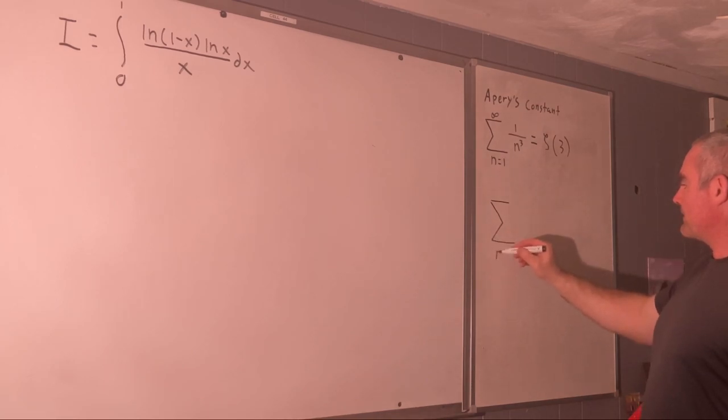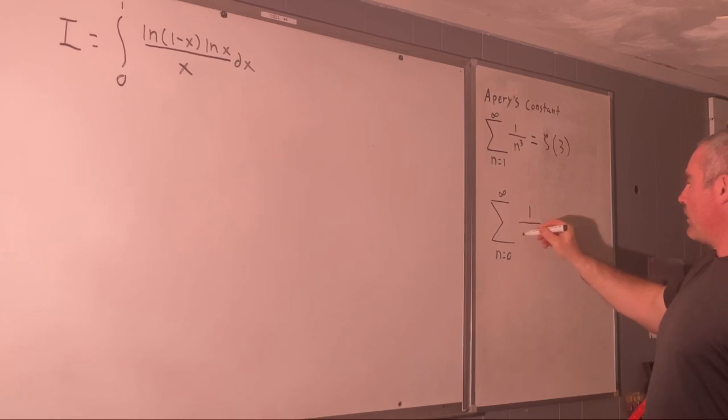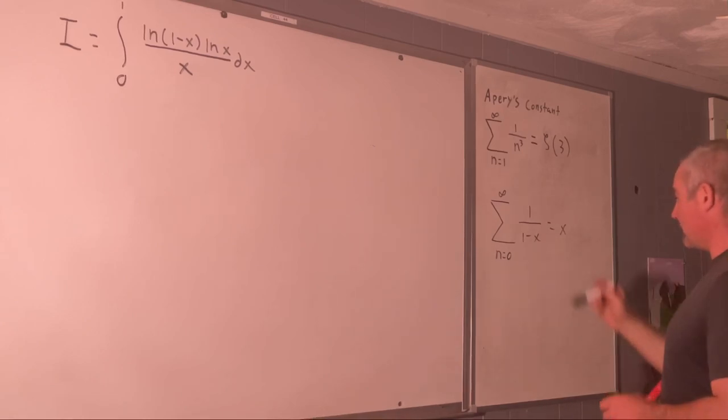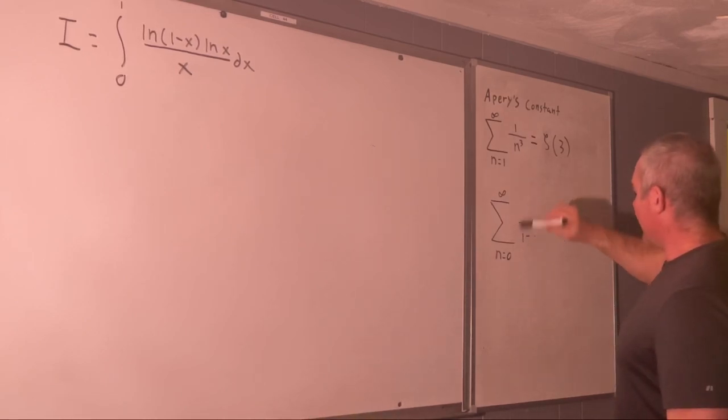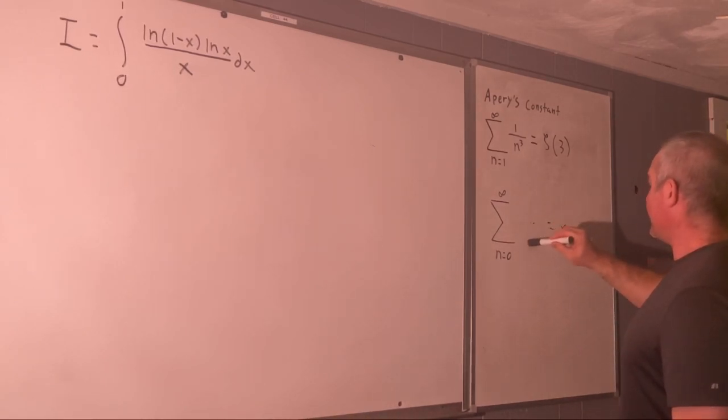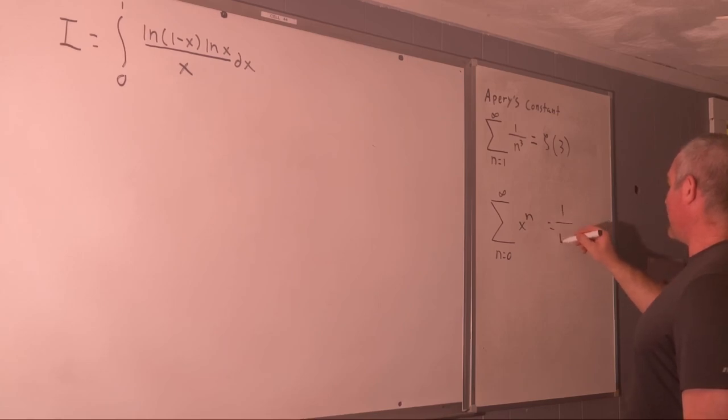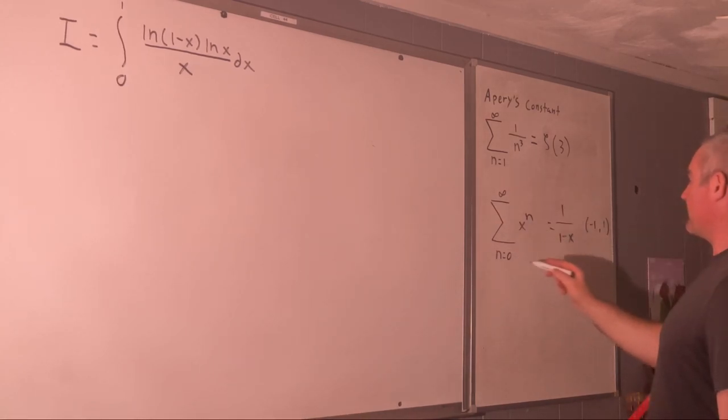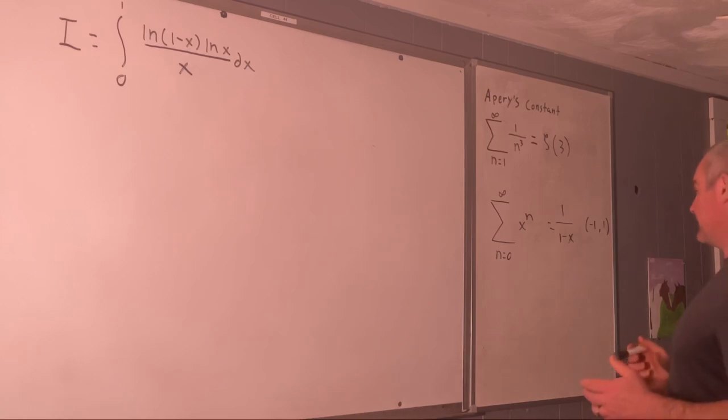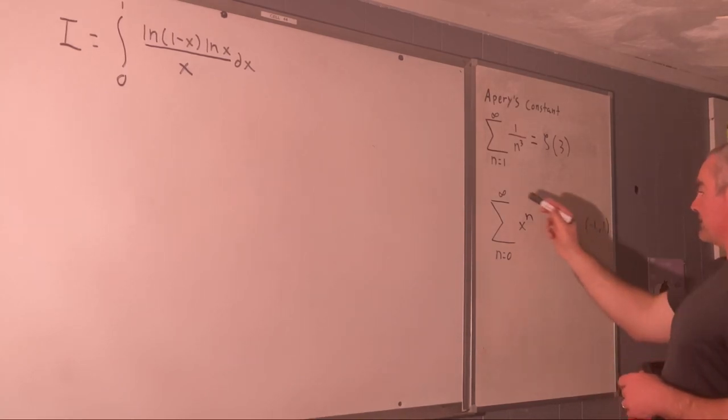We know that the sum from N equals zero to infinity of X to the N is equal to one over one minus X on negative one to one. So if we integrate this term by term, or I should say anti-differentiate this term by term, we should get the anti-derivative of this.